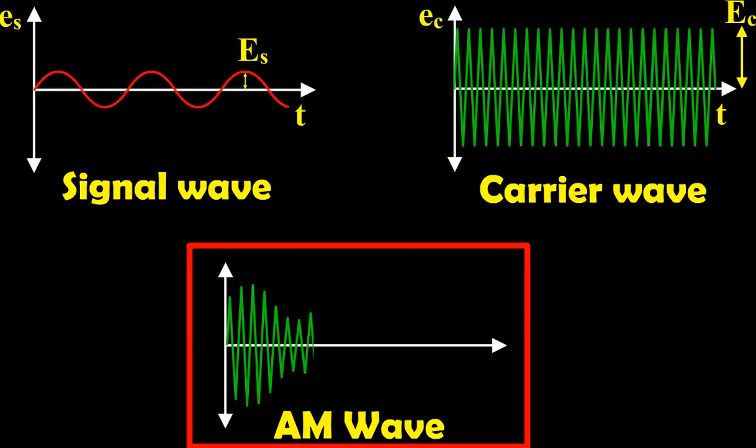In amplitude modulation, only the amplitude of the carrier wave is changed.